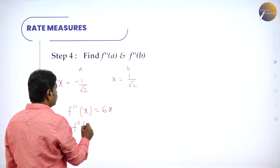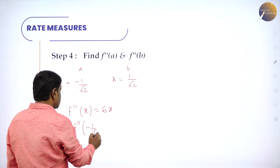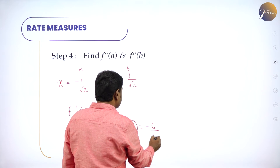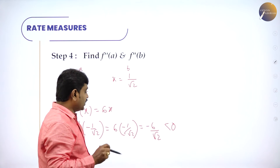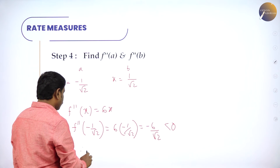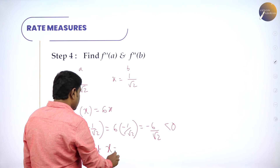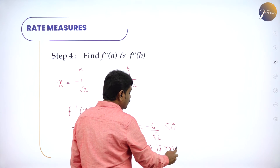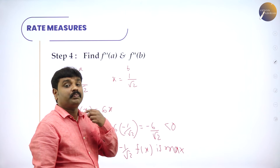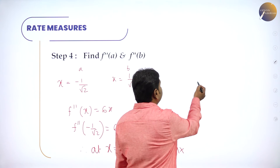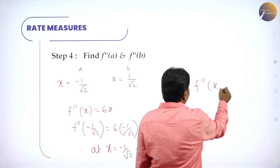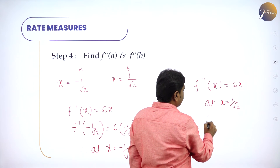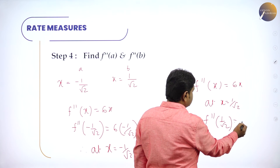Now substitute the x values. f''(x) = 6x (using the specific example). f''(−1/√2) = 6 × (−1/√2) = −6/√2, which is negative. If f''(x) is negative, the function is maximum. Therefore at x = −1/√2, f(x) is maximum. At x = +1/√2: f''(1/√2) = 6/√2, which is positive.